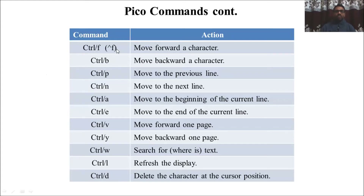Here are some Pico commands: ^F (Control+F) moves forward one character; ^B (Control+B) moves backward one character; ^P moves to the previous line; ^N moves to the next line; ^A moves to the beginning of the current line.